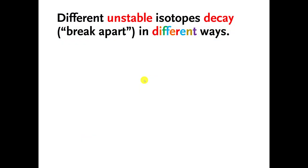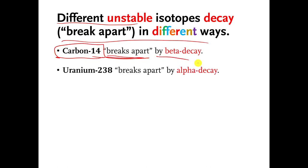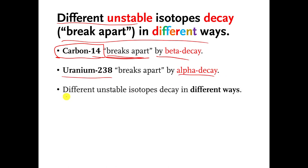Welcome back. This is a summary slide before we move on to new things. The point I want to make here is that different unstable isotopes all decay in their own special ways. Carbon-14 breaks apart by beta decay. Uranium-238 decays by alpha decay. Different unstable isotopes decay in their own special way.